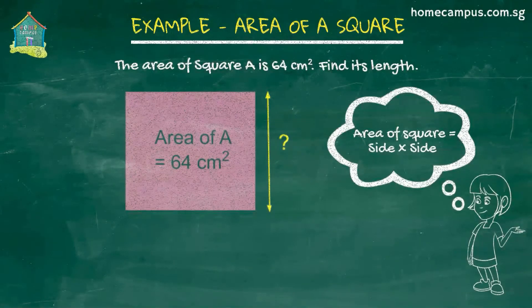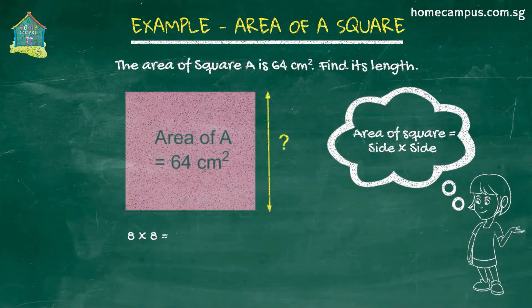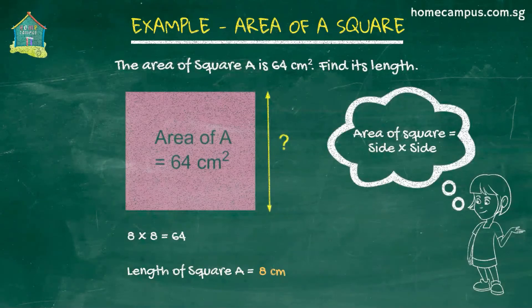Now which number when multiplied by itself gives you 64? If we recall our times tables we will figure out that that number is 8, because we get 64 when we do 8 times 8. So the length of square A is 8 centimeters.